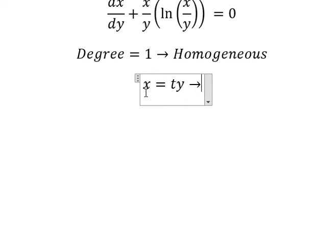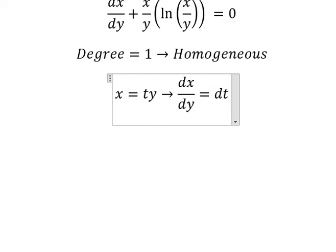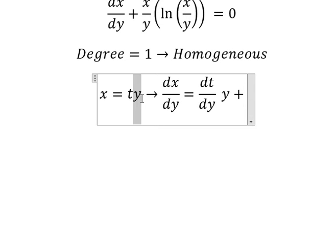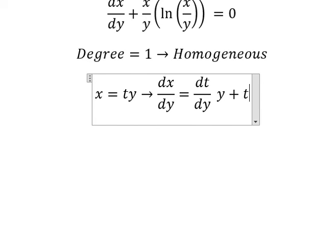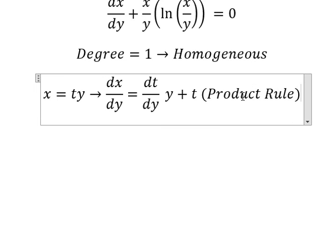We do first derivative for both sides. First derivative of t we have dt over dy. First derivative of y, we have t. This is the product rule of derivative.